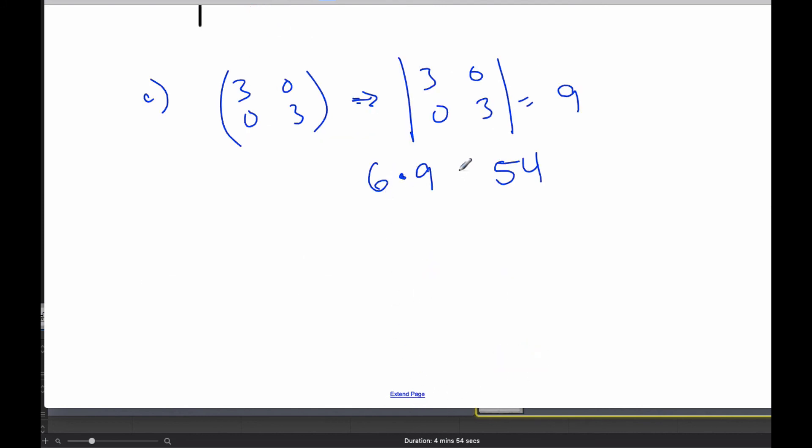Well, it looks like when I multiply those two, I get this. So the area of the original times the determinant of the transformation matrix